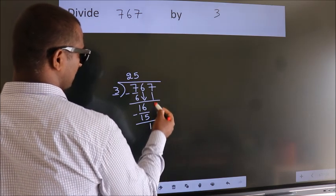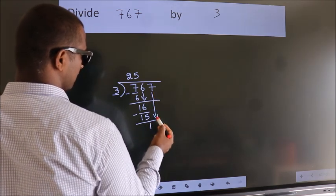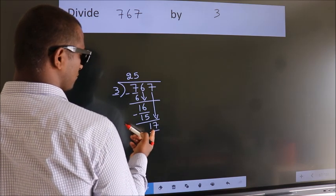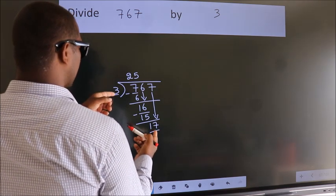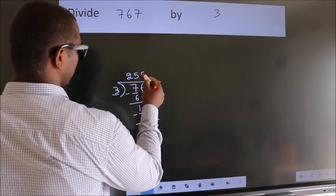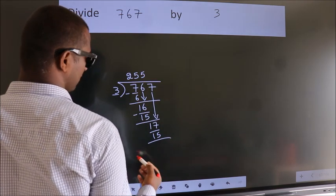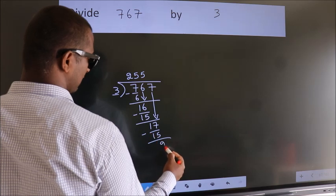After this, bring down the beside number. So 7 down. 17. A number close to 17 in the 3 table is 3 fives, 15. Now we subtract. We get 2.